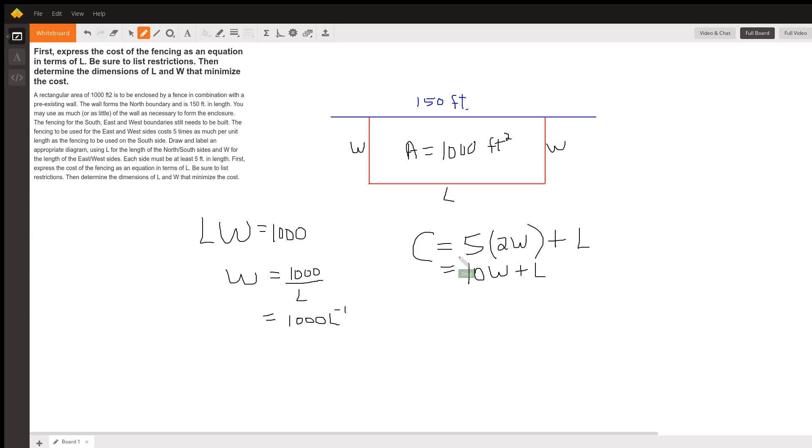if we just assume it's like a dollar per foot for the fencing, then the cost for the W sides is five times two W, and then plus the cost for the fencing that goes along the L side would be plus L.